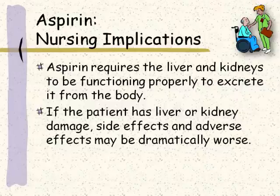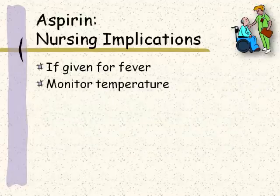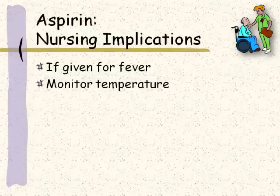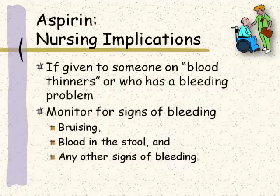Aspirin requires the liver and kidneys to be functioning properly to excrete it from the body. So remember and monitor: if the patient has liver or kidney damage, the side effects and adverse effects may be dramatically worse. If we give this person aspirin for fever, it's the nurse's job to monitor the temperature — is it working? Is the aspirin bringing the person's temperature down? If we give a person aspirin and they happen to be on blood thinners or have a bleeding problem, we really need to be monitoring for signs of bleeding — that could be bruising, blood in the stool, and any other signs of bleeding.